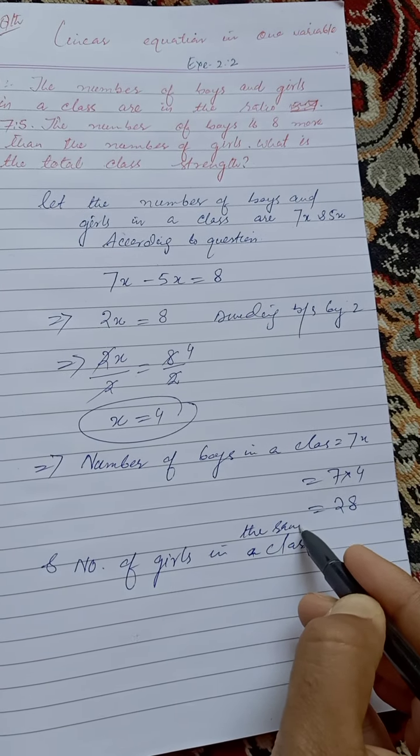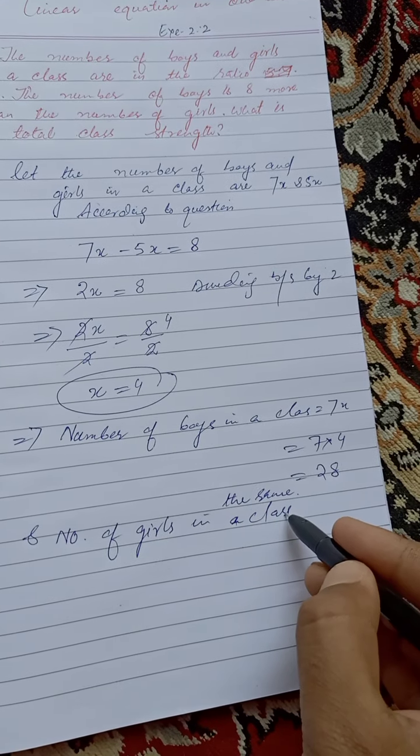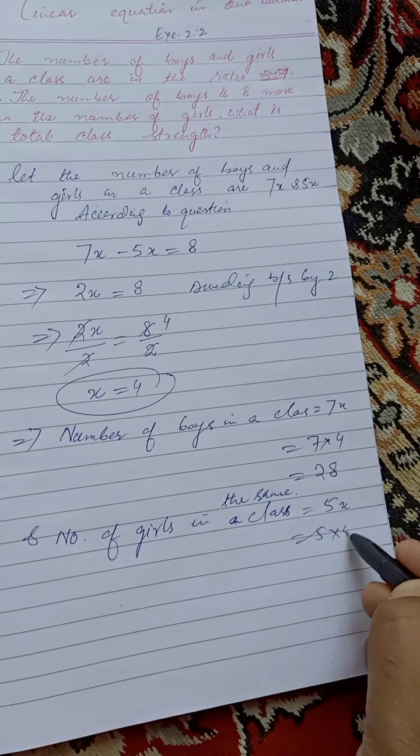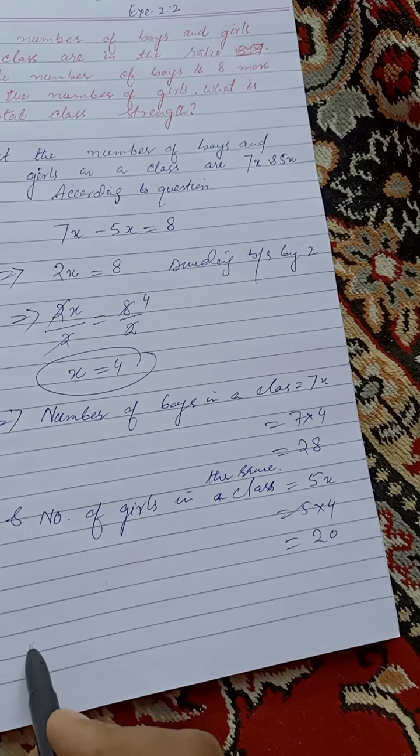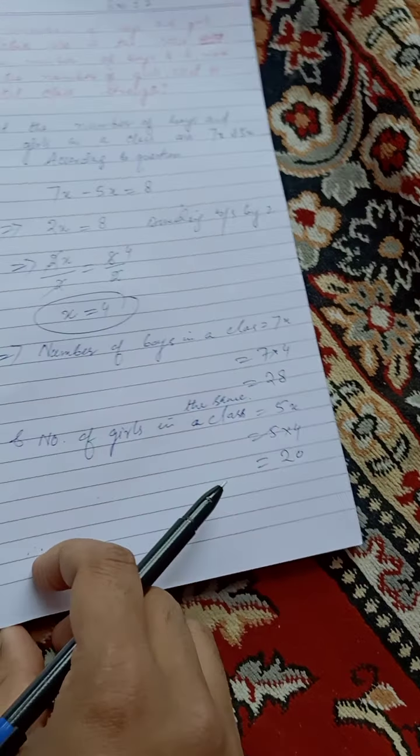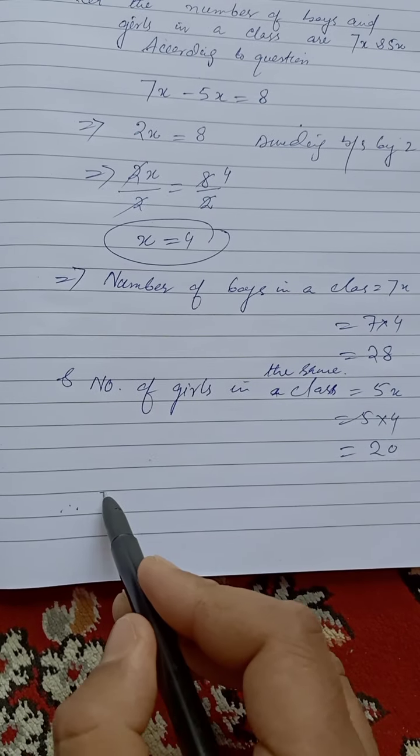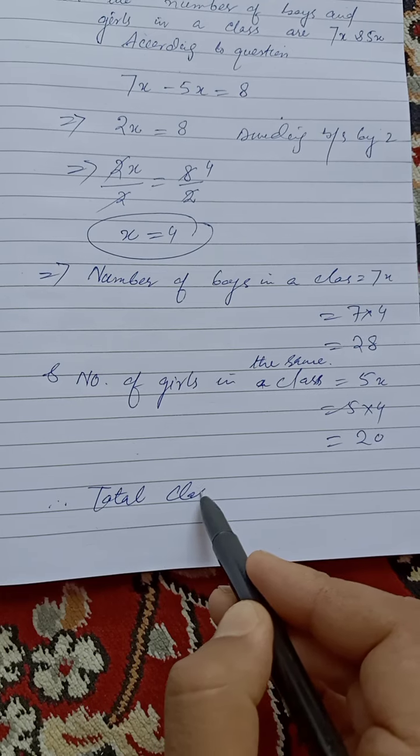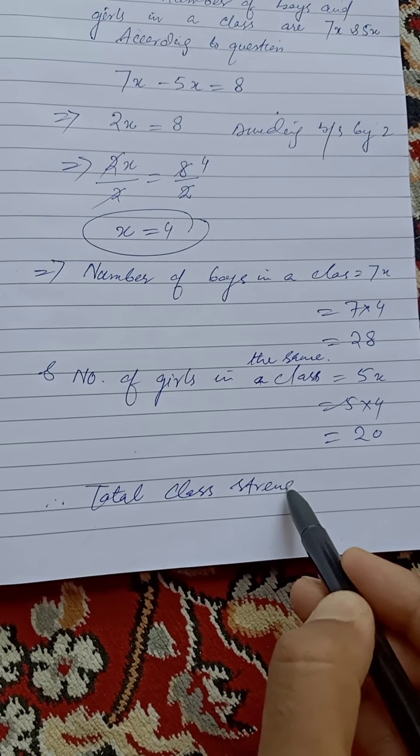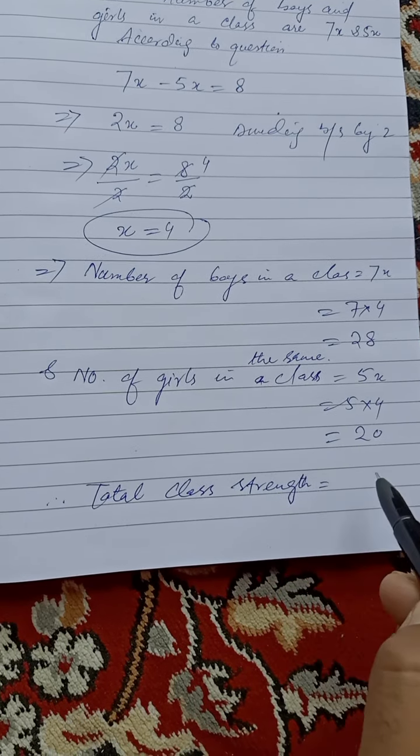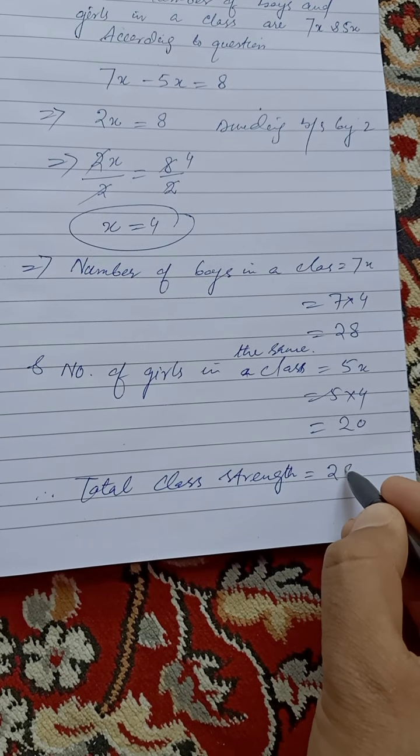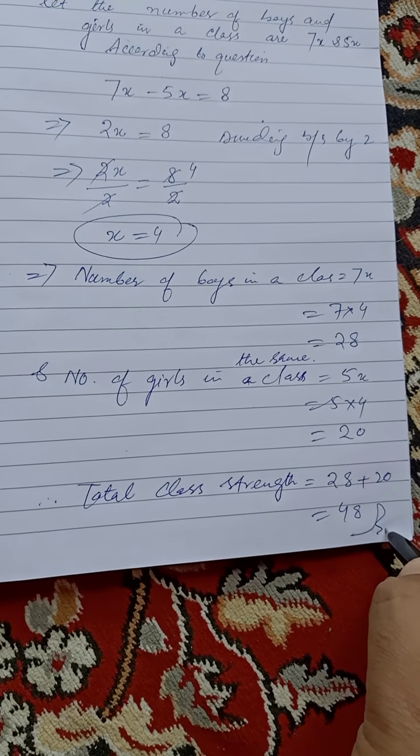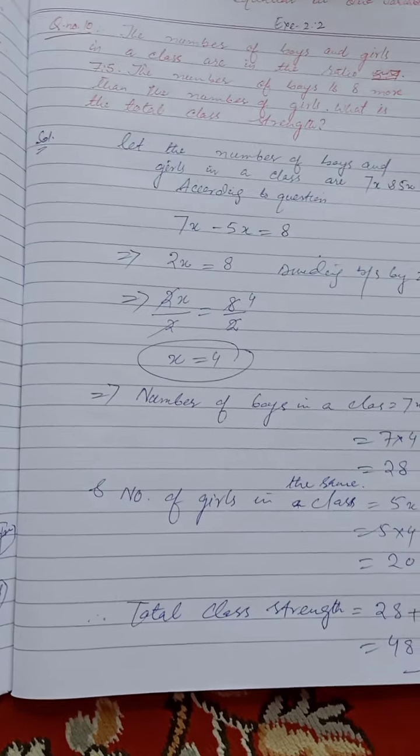And the number of girls in the same class is 5x, that means 5 into 4, which is 20. Therefore, the total class strength is 28 plus 20, that means 48.